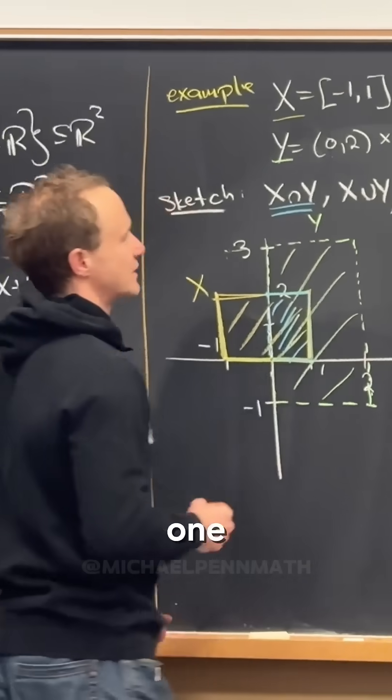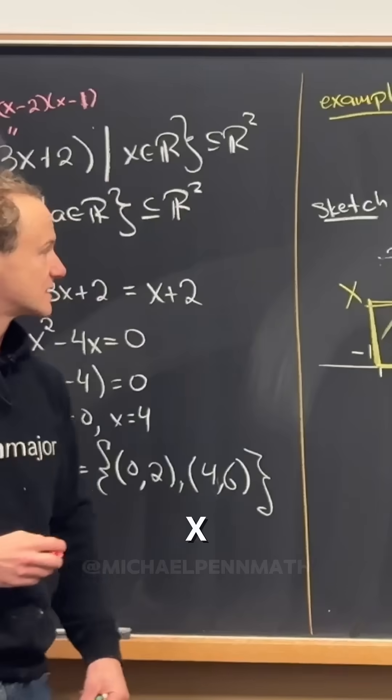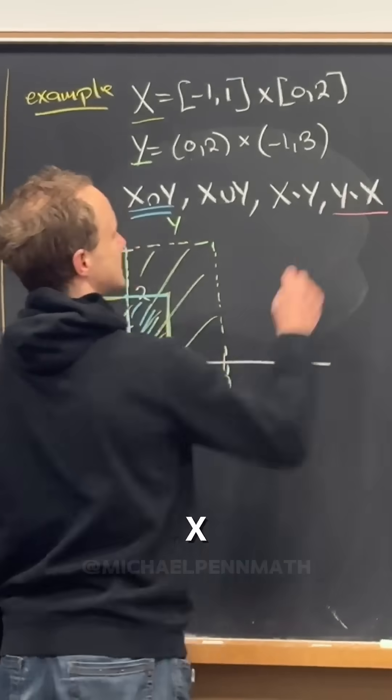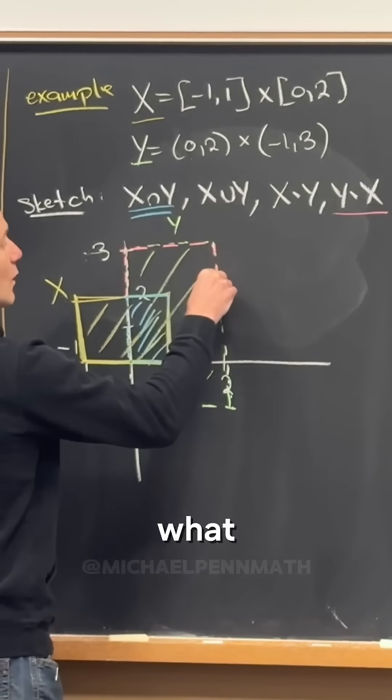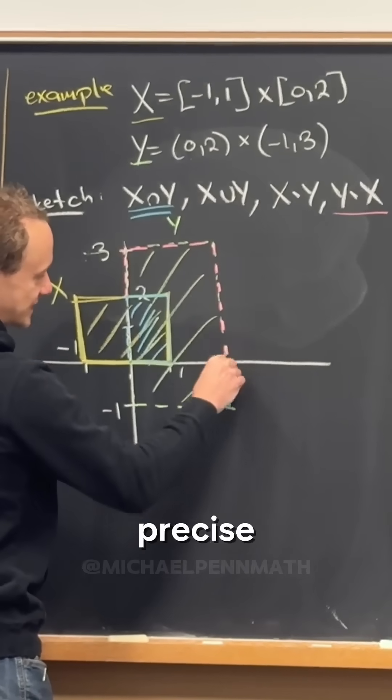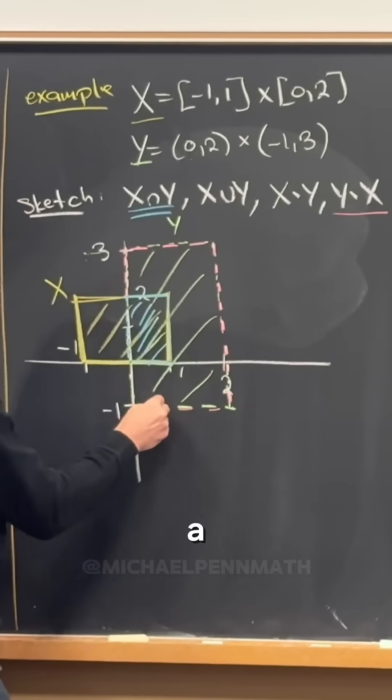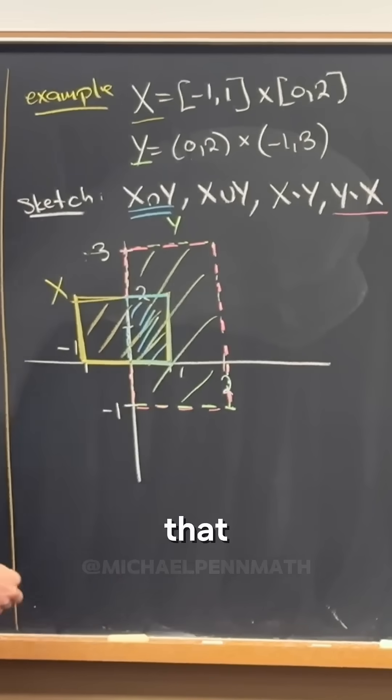And then maybe which one do you want to do? X minus Y or Y minus X? So let's do Y minus X. So it's going to be dotted here around what we would call the boundary. There's actually a precise definition for boundary that you would learn in a topology class. Doesn't that sound fun?